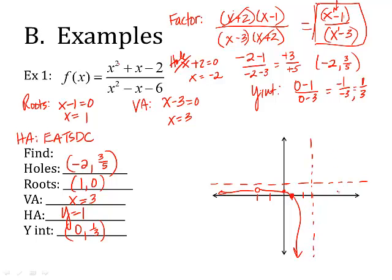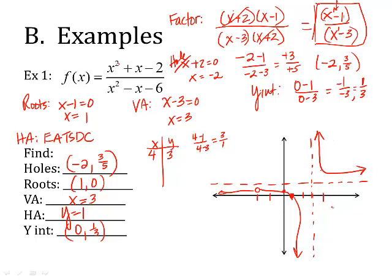Now we need to decide what's going on on the right-hand side. We need to test it. If x is 4, I plug it into my reduced equation: 4 minus 1 over 4 minus 3 gives me 3 over 1, so y is 3. At x equals 4, y is 3 — it's up there, meaning the curve is going to hug the asymptotes above the horizontal.